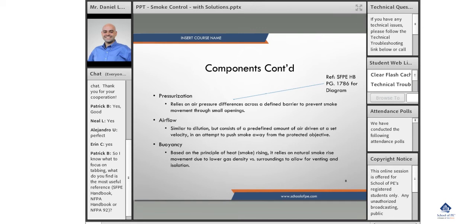Airflow is very similar to dilution, but it's a predefined amount of air driven at a set velocity, pushing smoke away from a protected objective. So usually we see that down a corridor, or maybe we have two atria linked by a long connecting corridor. Sometimes you can drop a fire curtain on that, but a lot of times an airflow movement is calculated or to stop smoke from moving down corridors. You'd rush air down that corridors, and that would push the smoke back.